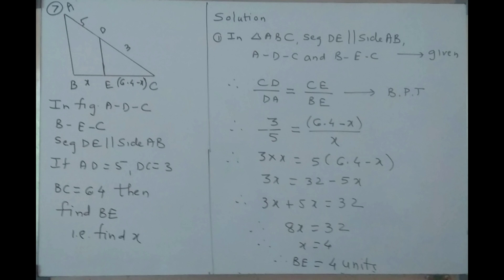Substituting the values: CD is 3, AD is 5. BC is 6.4 and BE is X, therefore CE is 6.4 minus X. By cross multiplication: 3 into X is equal to 5 into (6.4 minus X). Since it is a binomial, use brackets: 3X is equal to 32 minus 5X. Therefore 3X plus 5X equals 32, giving 8X equals 32, so X equals 32 upon 8. Therefore X equals 4. So BE is equal to 4 units.